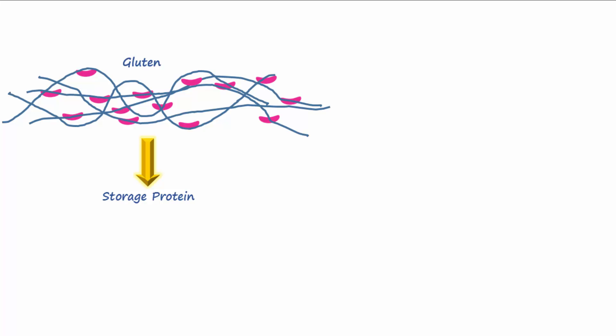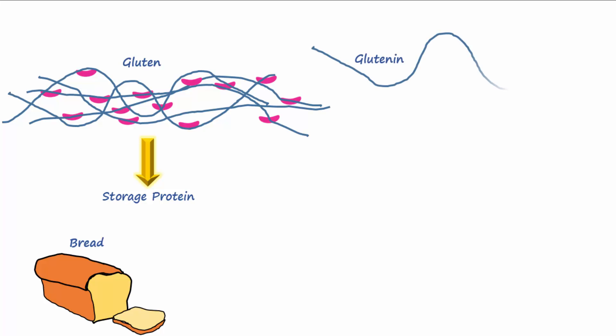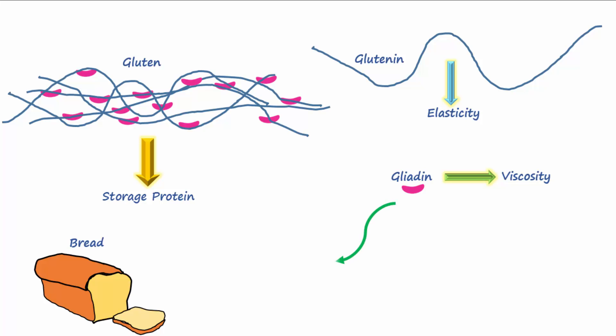Gluten is a major storage protein found in wheat, barley, and rye, and imparts properties to flour that make it ideal for bread making. Gluten is made up of glutenins, represented by the long filaments, and gliadin, represented by the curved-shaped violet structures. Gliadin imparts viscosity to wheat flour dough, whereas glutenins are mostly responsible for elasticity and cohesive strength.